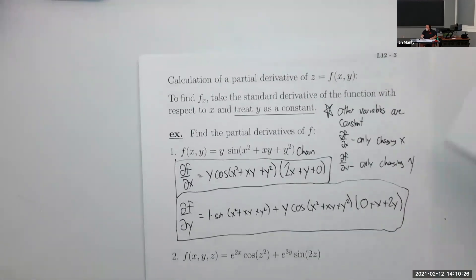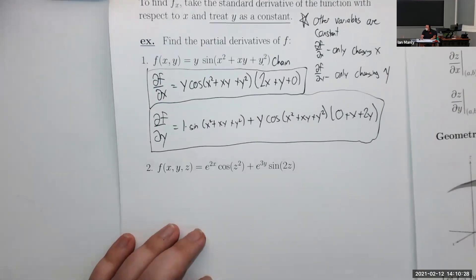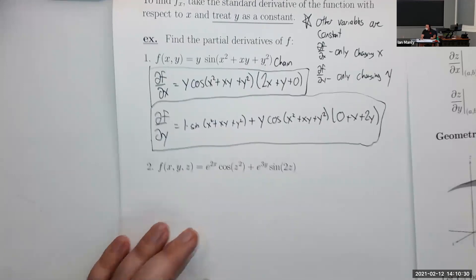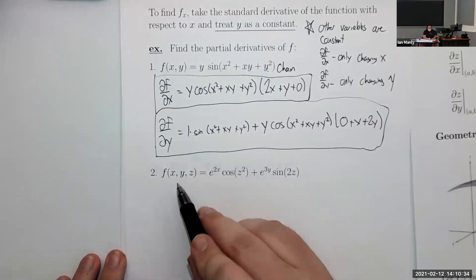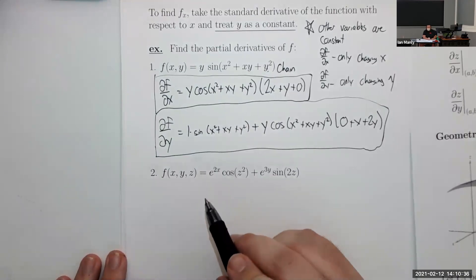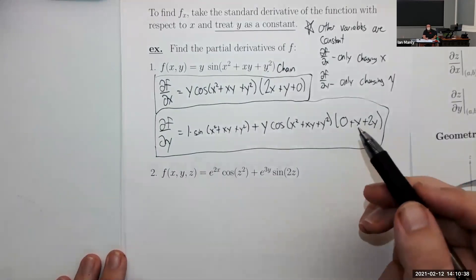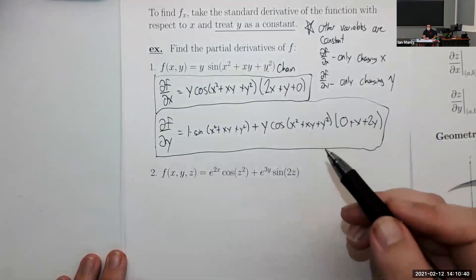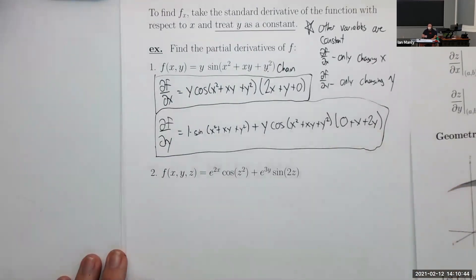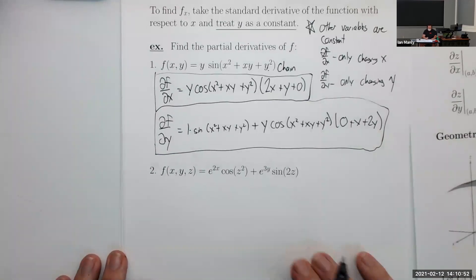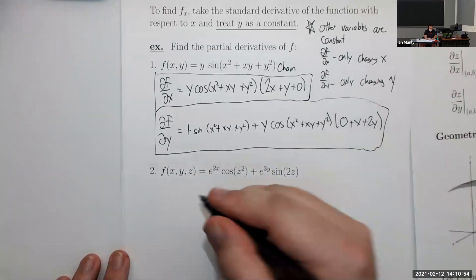Now let's move on to a function of three variables: f(x, y, z). Partial derivatives work the same way whether you have two variables, three variables, or a million variables — you simply do the derivative with respect to each one of them. Every time you do that, all of the other variables are treated as constants.